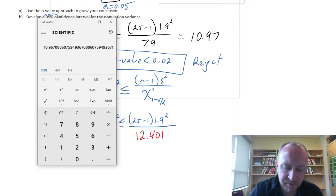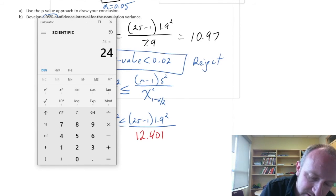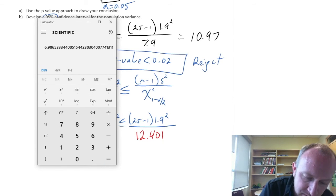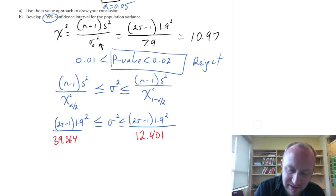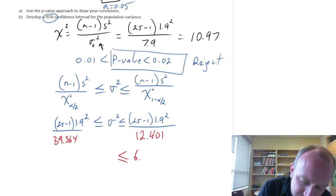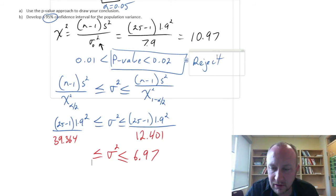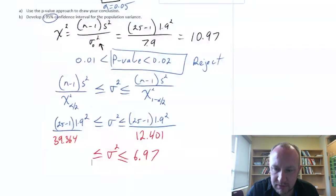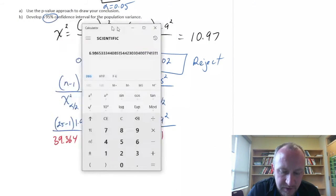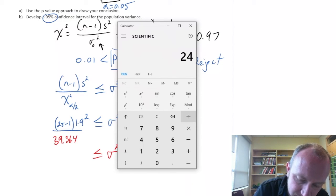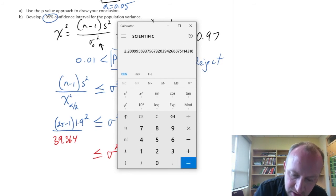Now it's just a matter of crunching the numbers. Let me get my calculator. So 24 times 1.9 squared equals divided by 12.401. 6.9, let's say 6.97. So 6.97. And this lower value, whoops, what have I done? I want this one here. 24 times 1.9 squared divided by 39.364, 2.2.